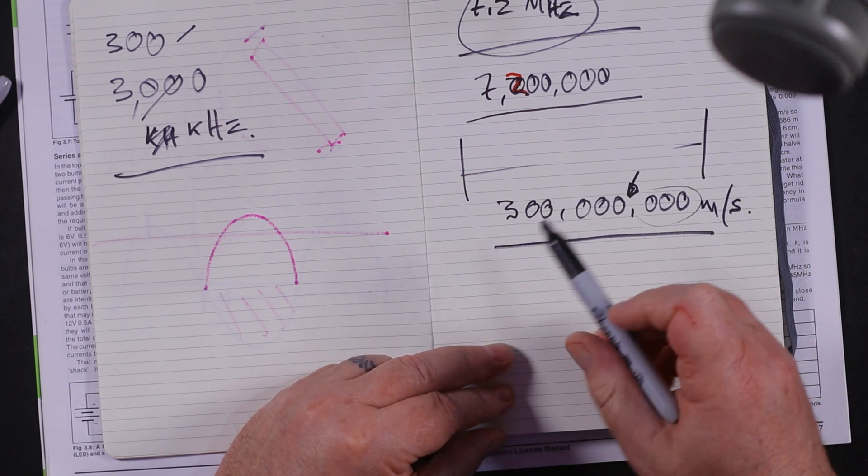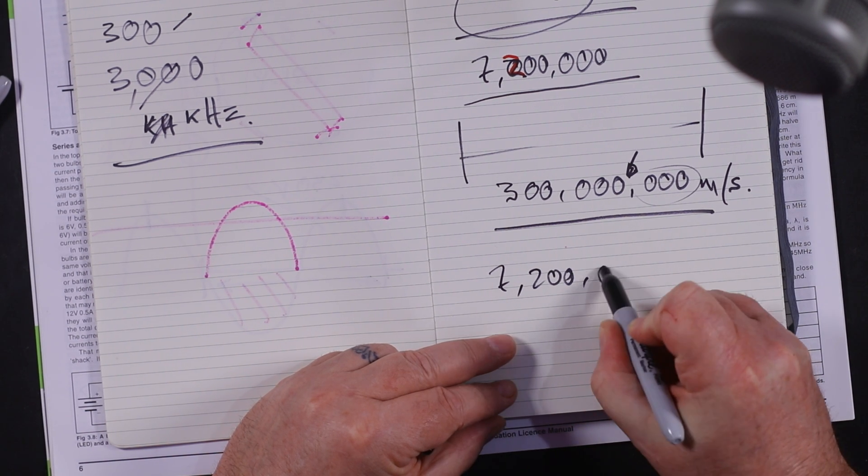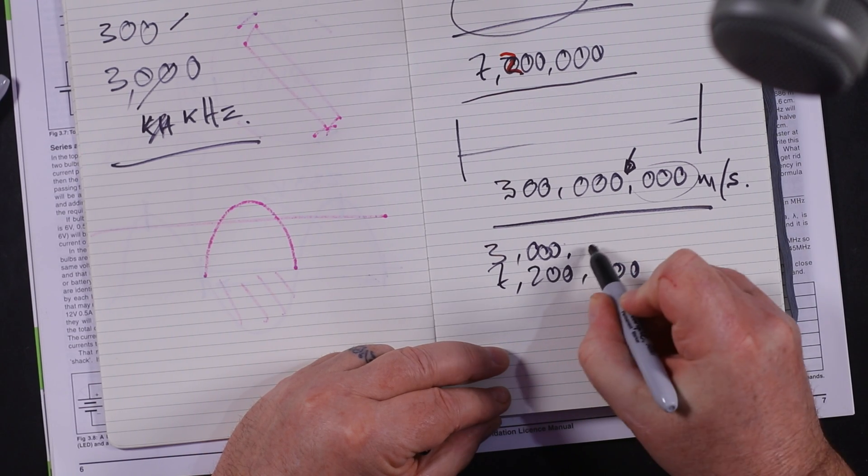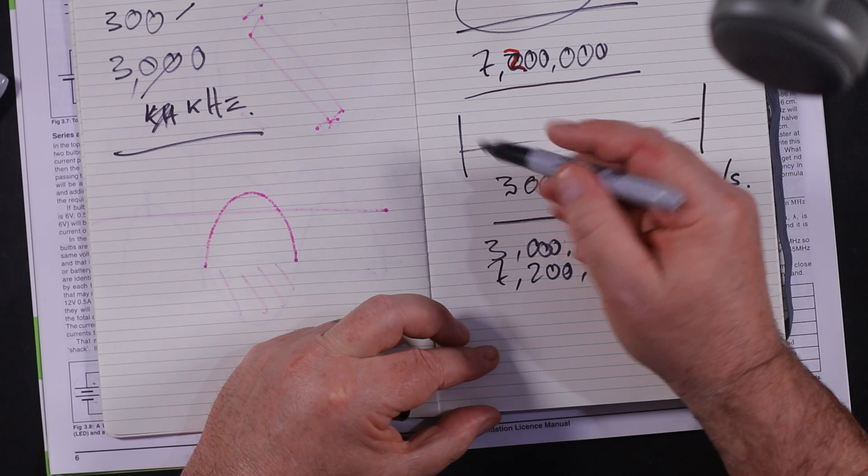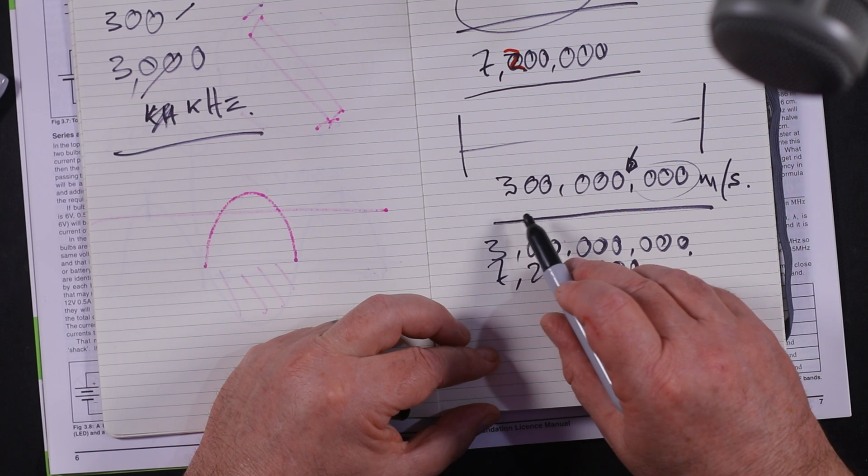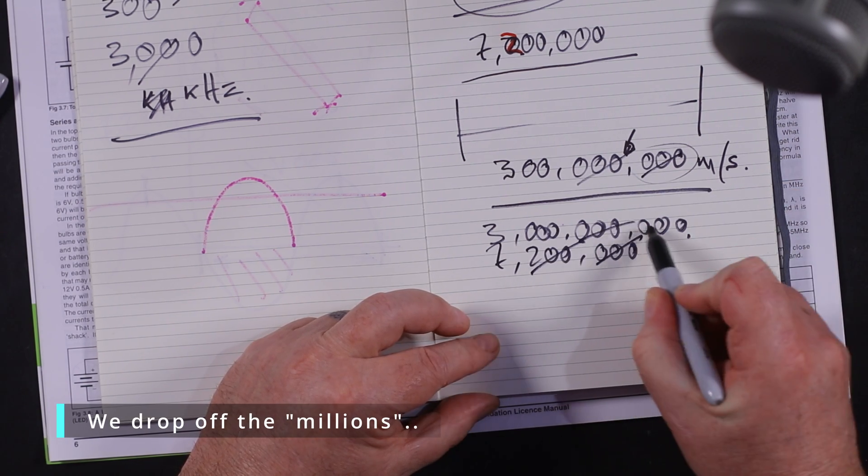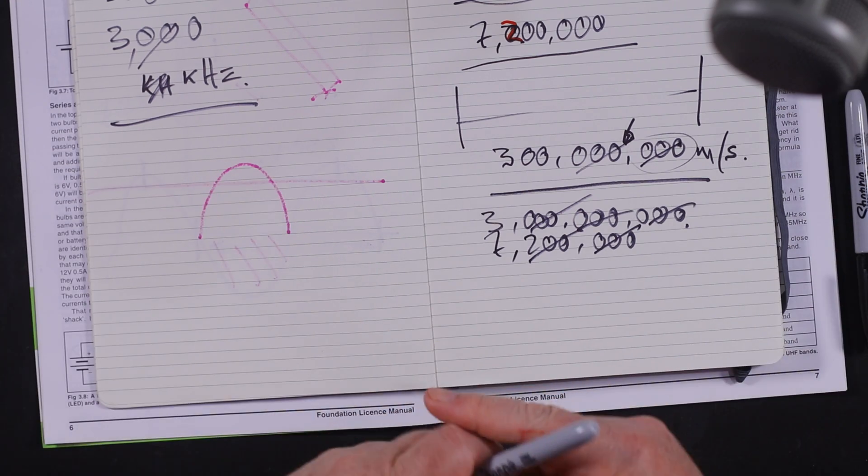If we've got 7.2 million and we've got 300 million, we can do some numbers. We can work out that if this thing is happening 7.2 million times in one second and the speed of light is 300 million meters per second, all we have to do is drop off all the zeros and say what is the wavelength of 7.2 megahertz? Well, it's actually 300 divided by 7.2.